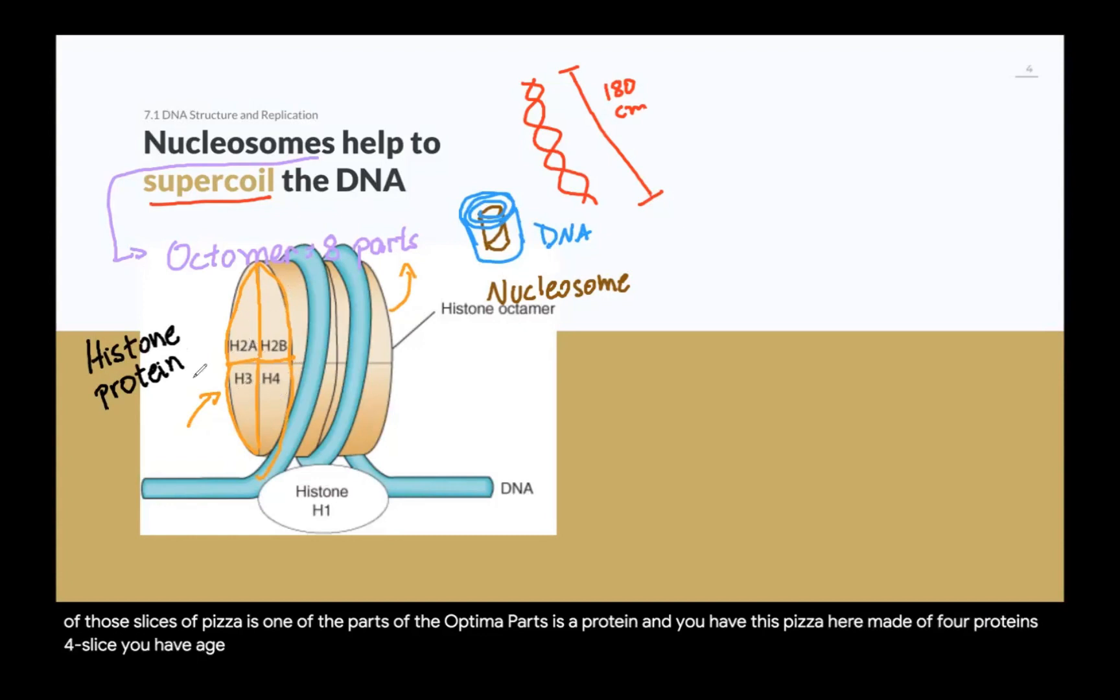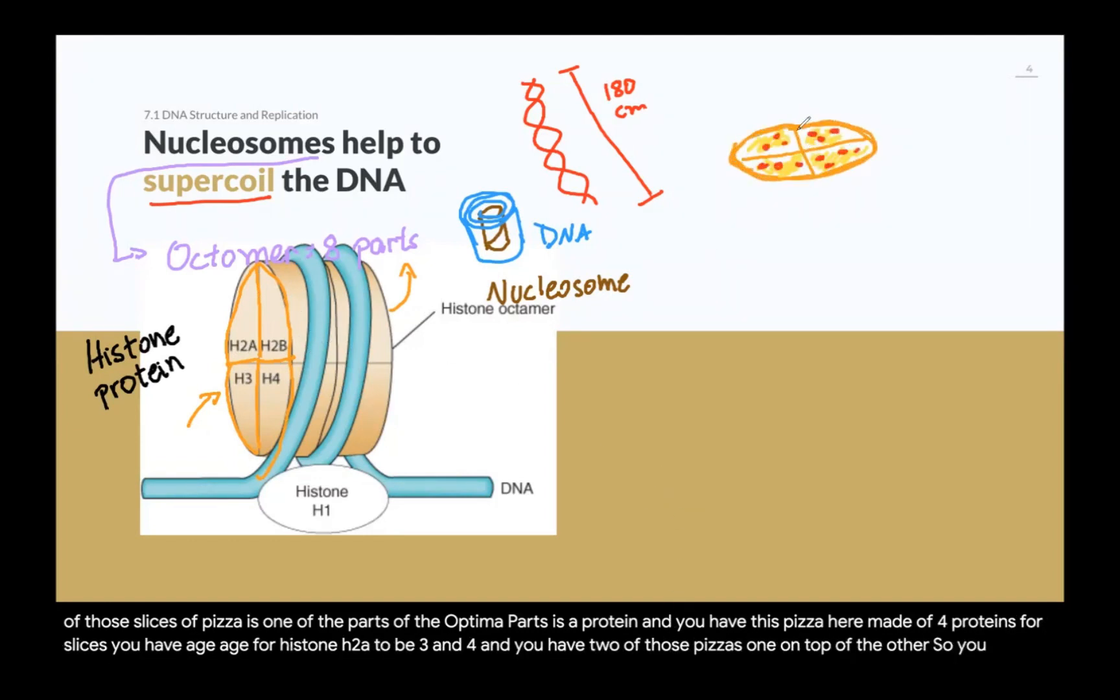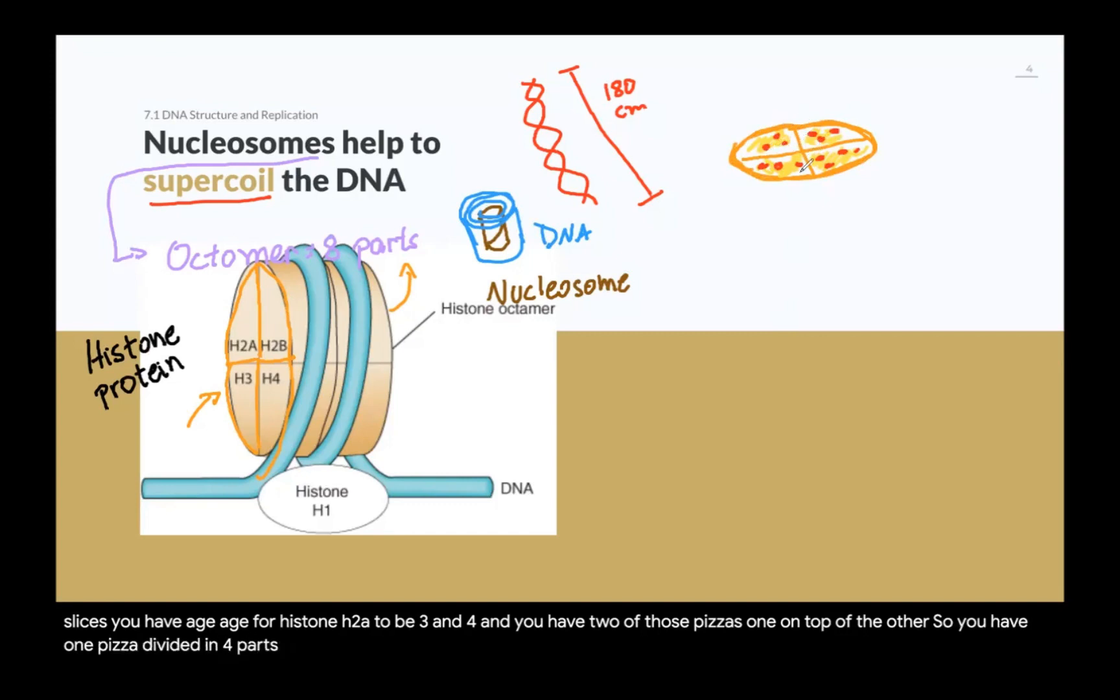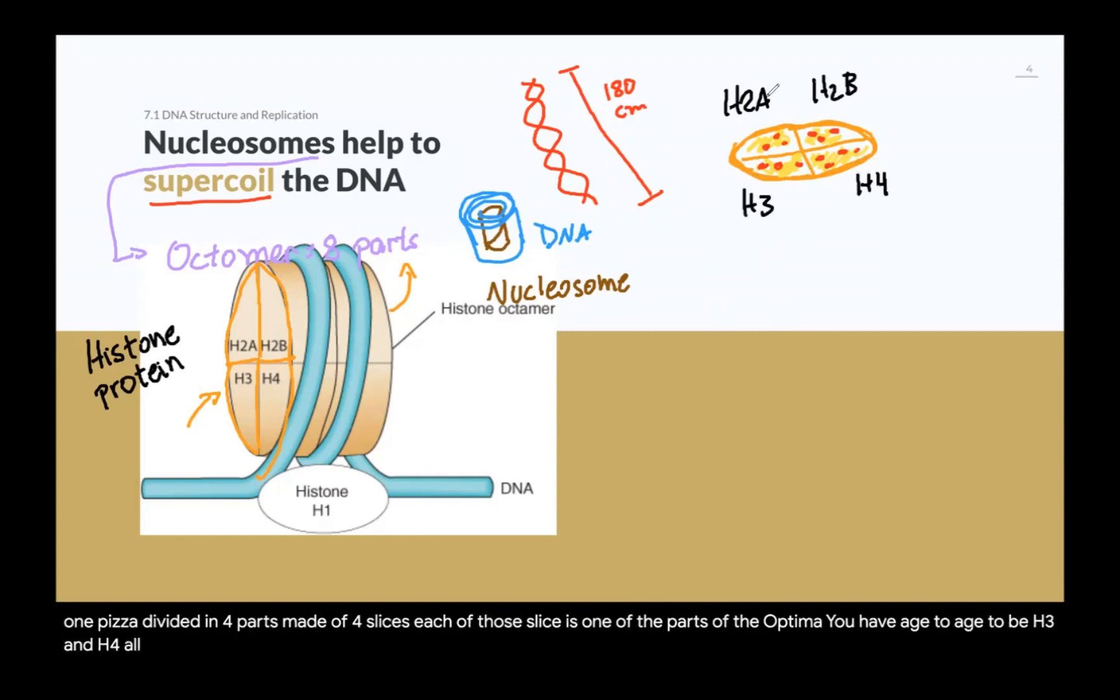So what you have actually is this disc here divided in four and then divided again in the middle. Each of those slices of pizza, imagine two pizzas, one on top of the other, and you have the pizza divided in four parts, four slices. Each of those slices of pizza is one of the parts of the octomer. So each of these parts is a protein, and you have this pizza here made of four proteins, four slices. You have H4, histone H2A, 2B, 3, and 4. And you have two of those pizzas, one on top of the other.